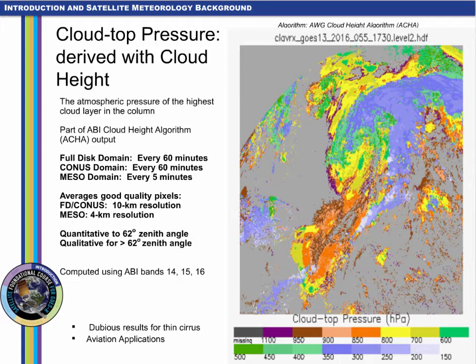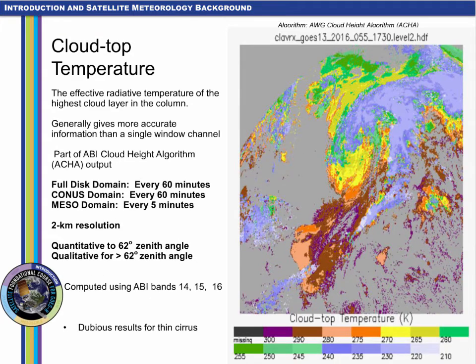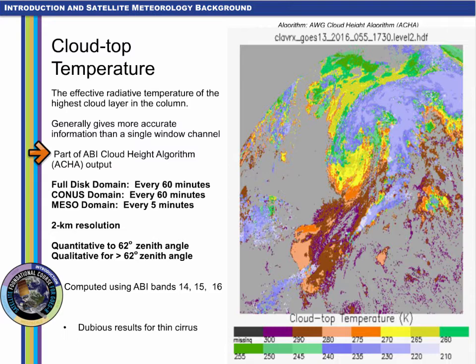ACHA variables are computed using bands 14, 15 and 16 — that is 11, 12 and 13 microns on GOES-R's ABI. Cloud top temperature is also baseline, and it is used in other products because it generally gives a more accurate value than individual channel values. It is computed in concert with cloud top height and cloud top pressure as part of the ABI Cloud Height Algorithm, or ACHA, using the 3 longest wavelength bands on ABI: 14, 15 and 16, that is the 11.2, 12.3 and 13.3 micron channels.